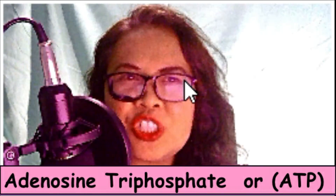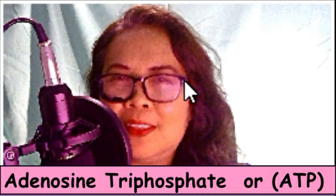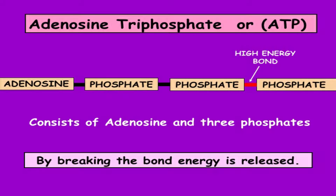In our body, all physical movements require a compound called adenosine triphosphate, or ATP. ATP consists of adenosine and 3 phosphates. By breaking the bond, energy is released.